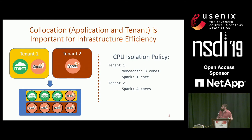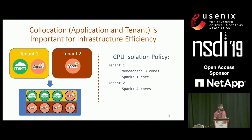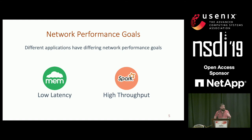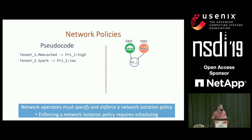Writing a CPU isolation policy for an imaginary eight-core server is relatively simple. Memcached gets three cores for tenant one, Spark for tenant one gets one core, and tenant two gets four cores. The problem is how do we specify application performance isolation in terms of the network, not just the CPU. These different applications have differing network goals — Memcached is our low-latency application and Spark is our high-throughput application.